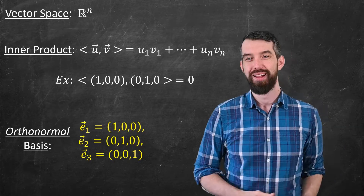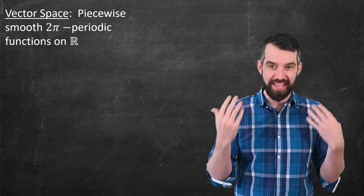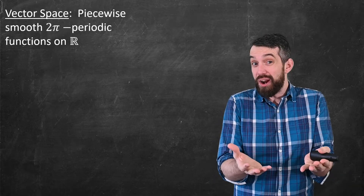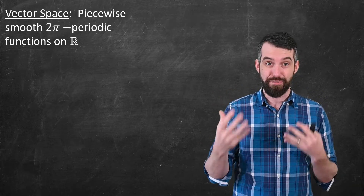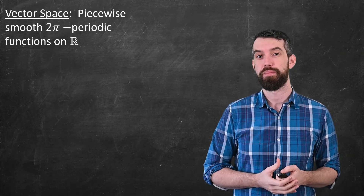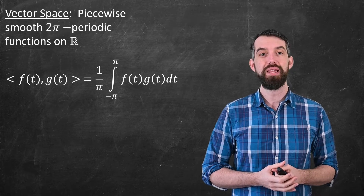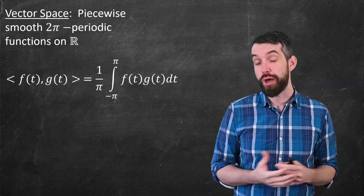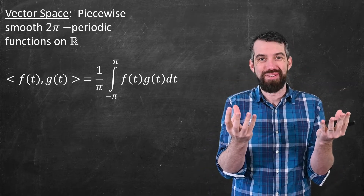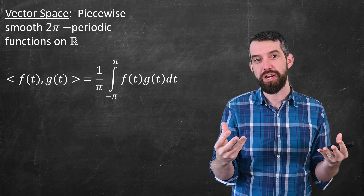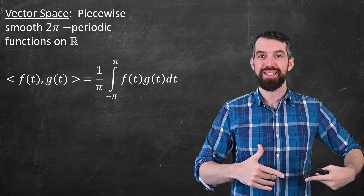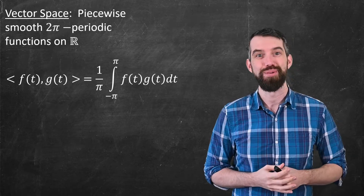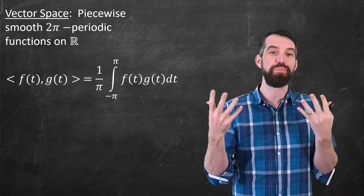Back to Fourier series — we're again in the vector space of piecewise smooth 2π-periodic functions on R. Is there an inner product here, some analog we've already studied? Indeed there is. The inner product is defined as (1/π) times the integral from −π to π of f(t)·g(t) dt. This takes two functions (our vectors) and outputs a real number, since a definite integral is a real number — exactly the structure of an inner product, and it satisfies all the required axioms.